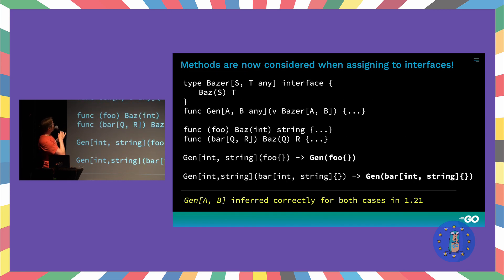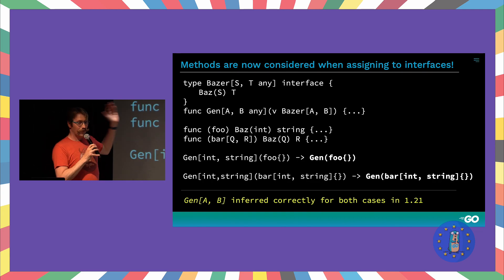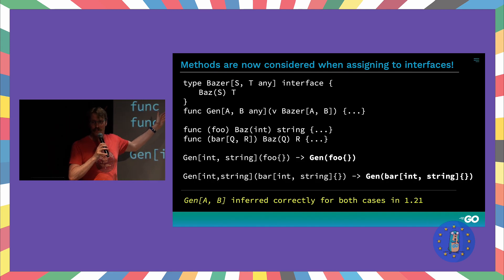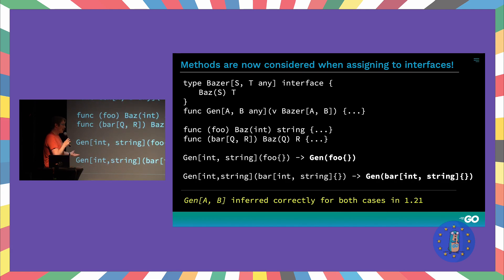As for interfaces, say you have a generic interface with a method that takes in two different types, and then you have a generic function that consumes that interface. You might have two different implementations — one that's a concrete implementation of that interface, or even a generic implementation of a struct. Before, you had to be very specific when calling your generic function and passing in one of those implementers. But now you don't have to do that. This now works, or will work, in Go 1.21.